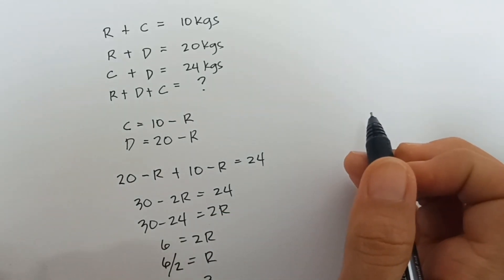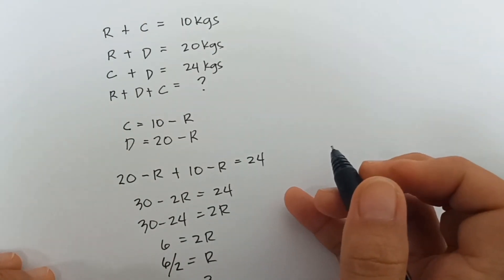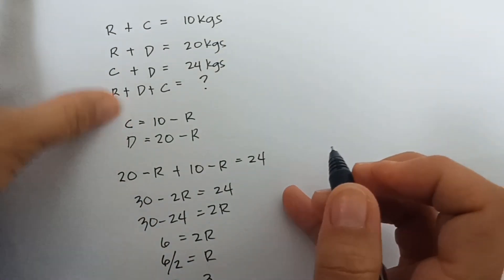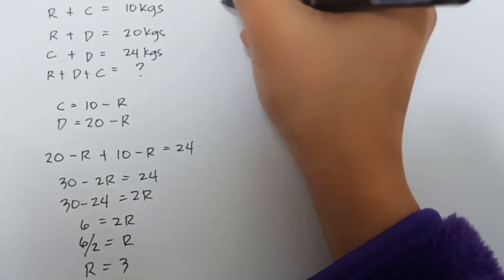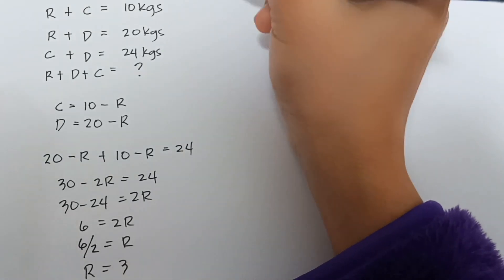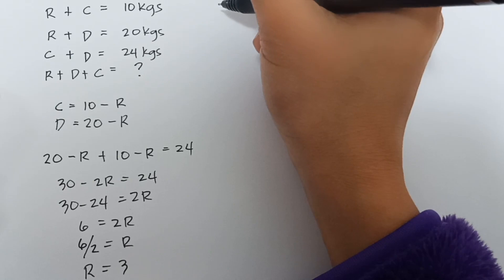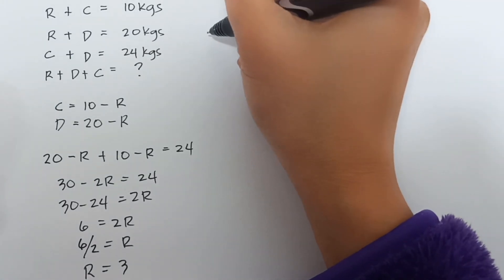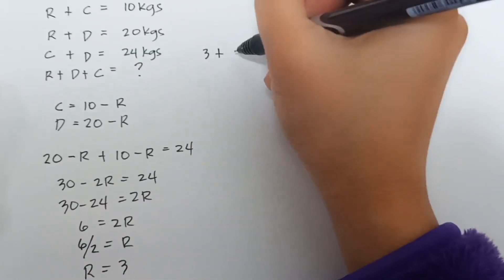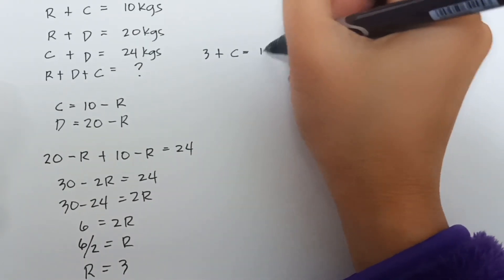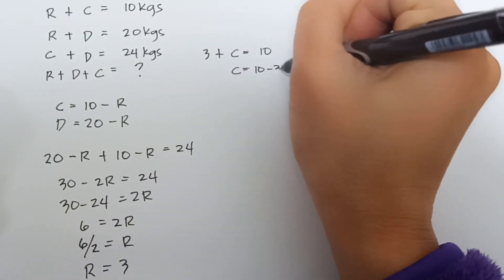Okay guys, we have the value of rabbit now, which is 3. So, let's find the value of cat. So, let's use the equation that rabbit plus cat equals 10 kilograms. So, we put the value of rabbit, which is 3. So, 3 plus cat equals 10. Then, cat equals 10 minus 3.